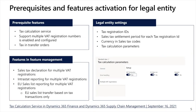Thank you, Adam. We'll start with information about how to activate this new functionality. To activate it, you first need to make sure that you have enabled in Feature Management the feature 'Support multiple VAT registration numbers,' and also that the tax calculation service is enabled. Also, if you transfer goods between warehouses in different countries, you should enable the 'Tax on transfer orders' feature. Then you need to activate the new features in Feature Management: sales tax declaration, Intrastat reporting, and EU sales reporting for multiple VAT registrations. In the case of EU sales list, you should also activate the feature 'EU sales list transfer based on tax transactions only.'